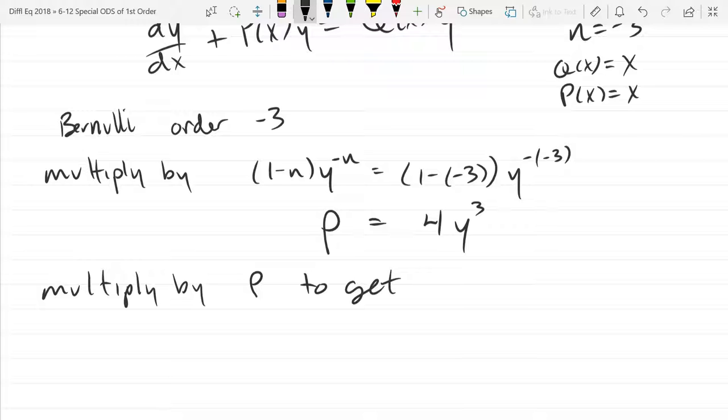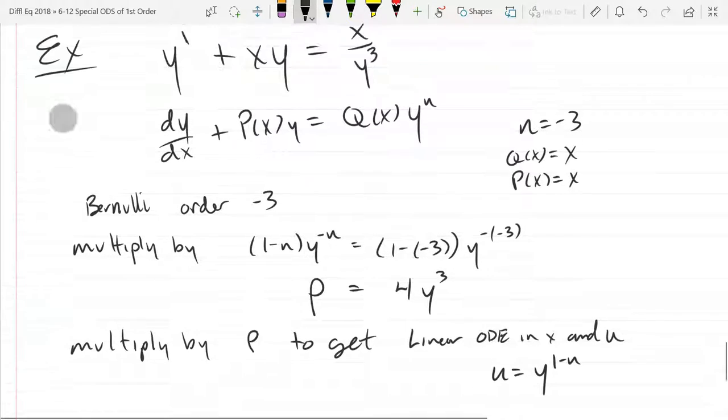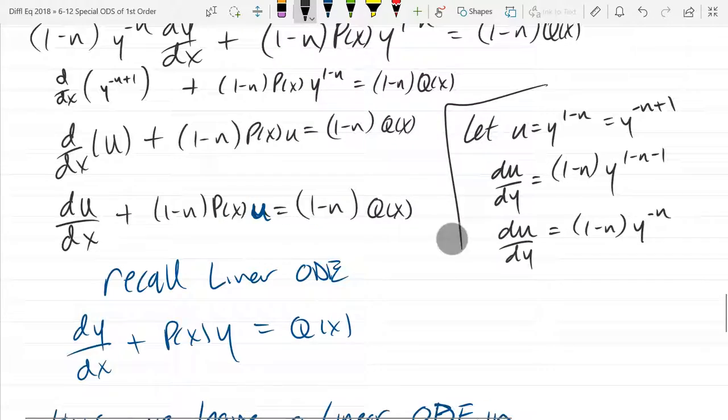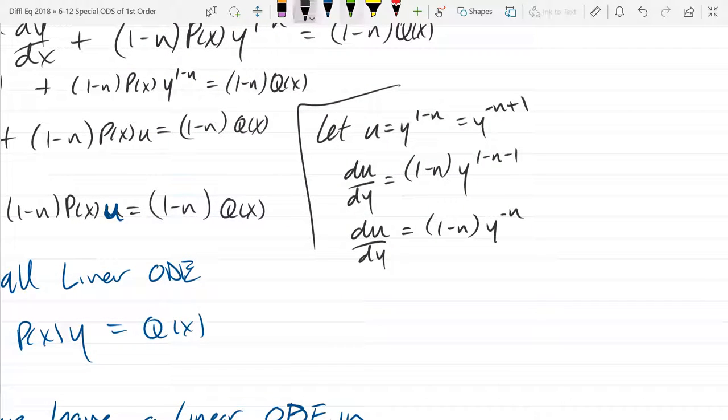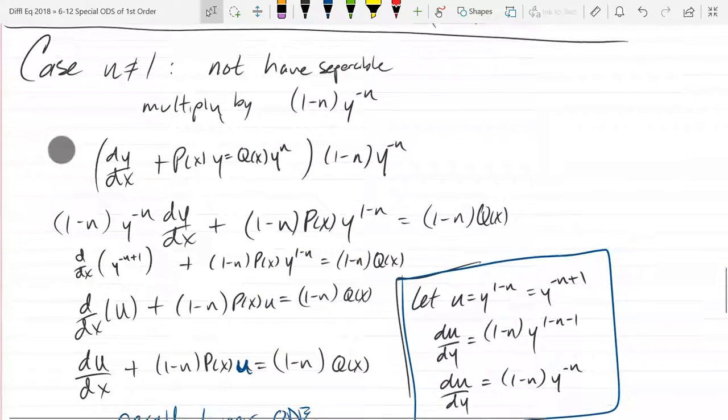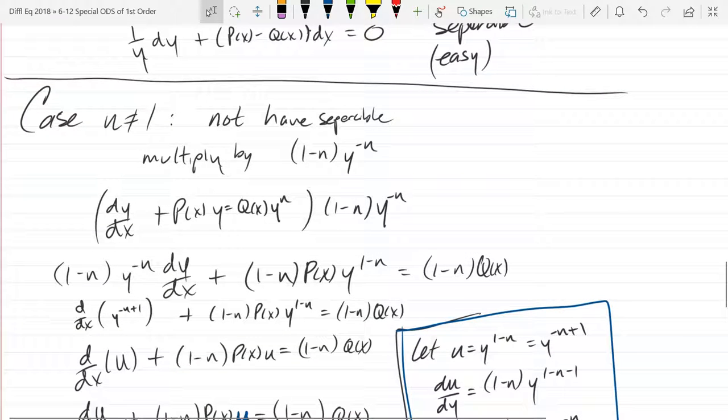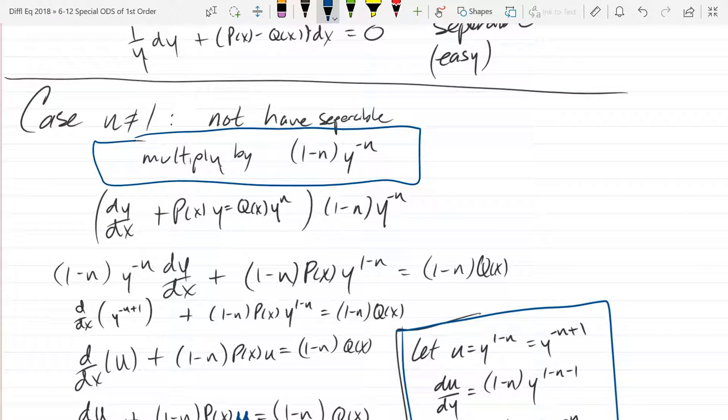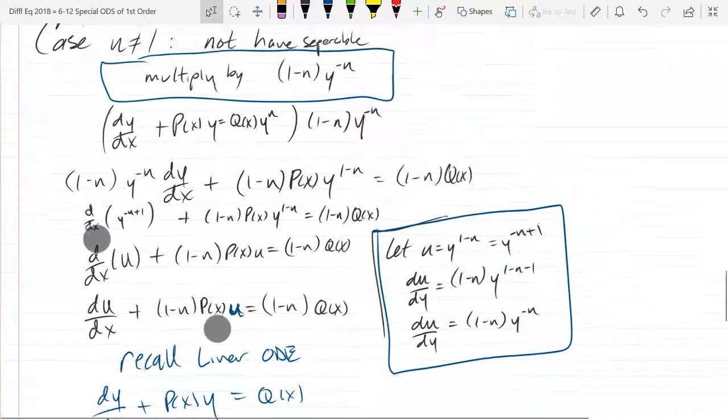Let's see. So you get linear ODE in x and u. And of course u is going to equal something. U is y to the 1 minus n. And I will circle that. I don't know if I made that super clear. So that substitution that we're focusing on is really right in this box here. So that's super important.